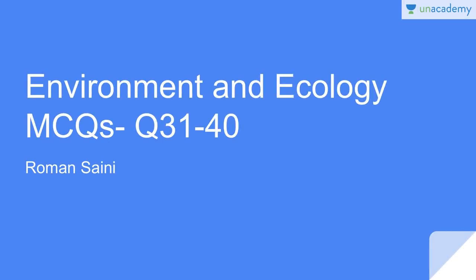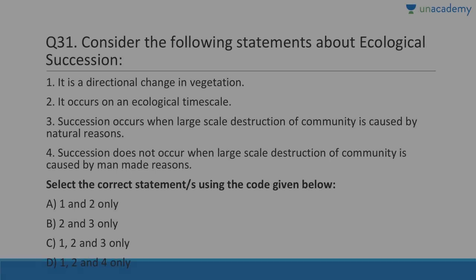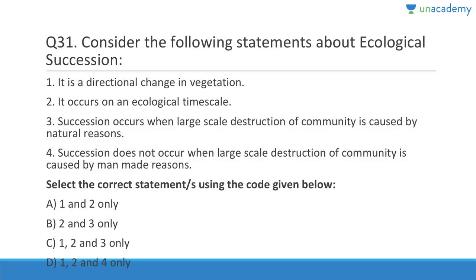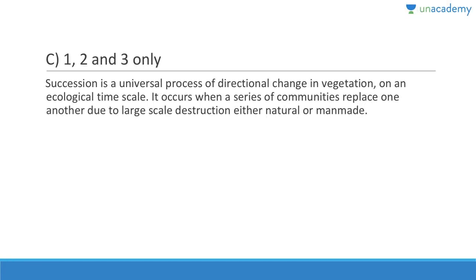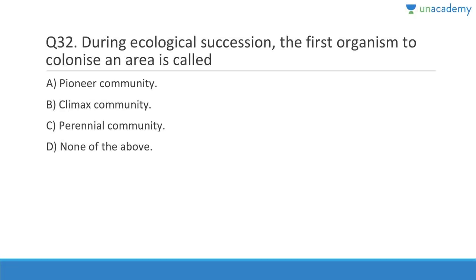Questions 31 to 40. Question 31: Consider the following statements about ecological succession. It is a directional change in vegetation — correct. It occurs on an ecological time scale — correct. Succession occurs when large-scale destruction of communities is caused by natural reasons — correct. Succession does not occur when large-scale destruction is caused by man-made reasons — not correct. Answer is C, 1, 2, and 3. Succession can be caused by either natural or man-made reasons.